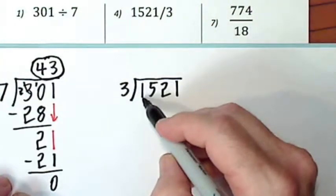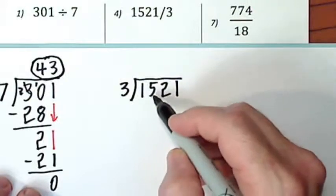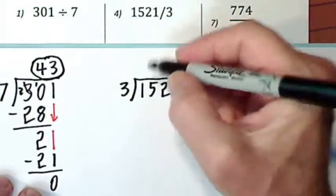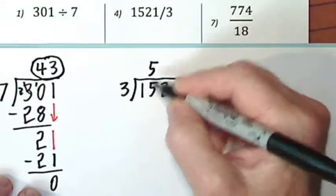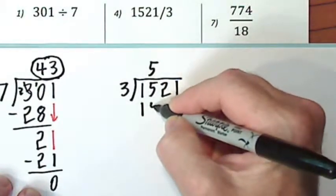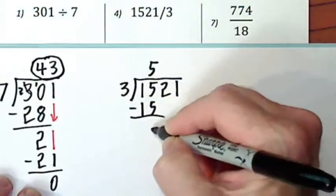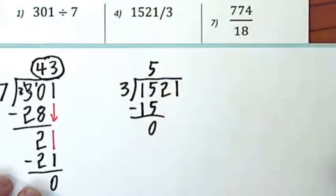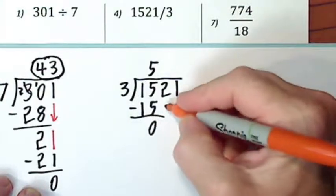Three won't go into a one, but I can ignore it here. Three goes into fifteen, five times. Five times three is fifteen. Now I bring down the next digit.